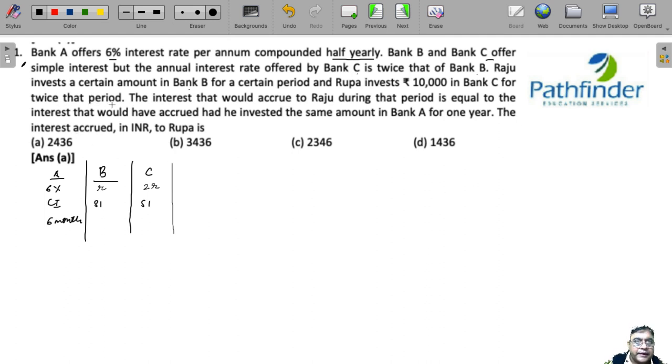Raju invests a certain amount in Bank B for a certain period. Nothing is given - no principal, just a certain amount. Let's say he invested a principal P for some time T.